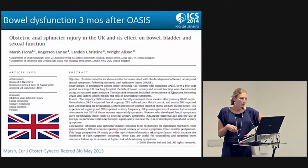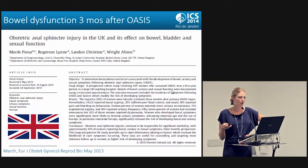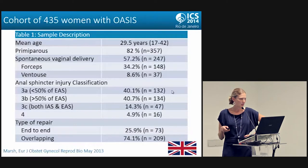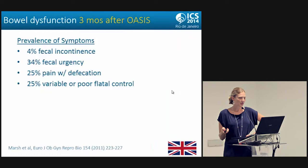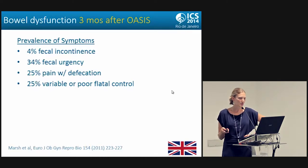When you look at bowel dysfunction three months after obstetric anal sphincter injury, this was a prospective cohort of 435 women who had an OASIS in the UK over a five-year period. Mean age was 29.5 years, 82% were primips, 57% had a spontaneous vaginal delivery, 34% had a forceps, and 10% had a vacuum. Regarding injury classification, 80% had 3a or 3b and only 5% had a type 4; the majority were repaired in an overlapping fashion. At three months, there was only a 4% prevalence of fecal incontinence but a 34% prevalence of fecal urgency, a quarter had pain with defecation, and a quarter had variable or poor flatal control.